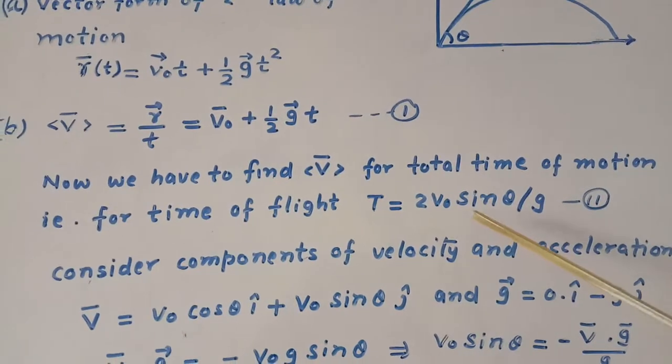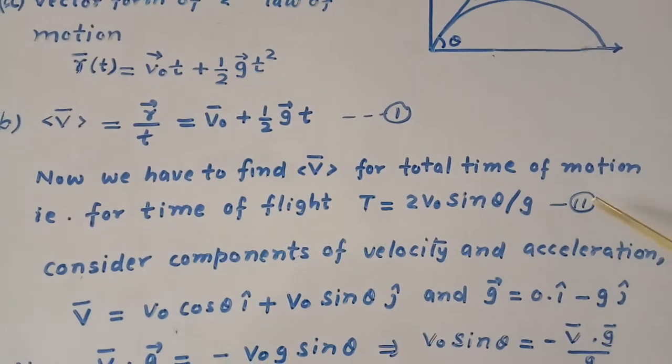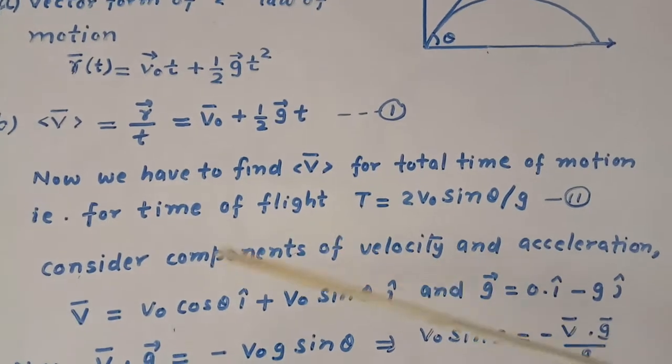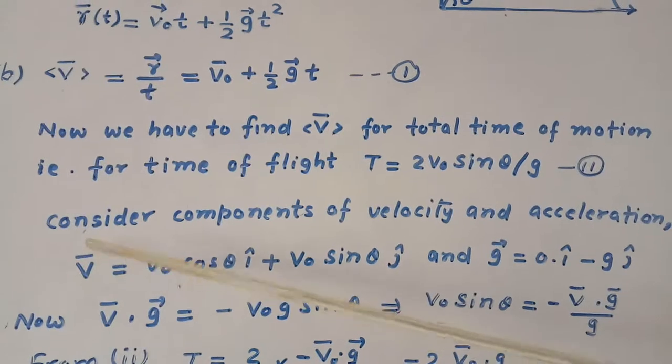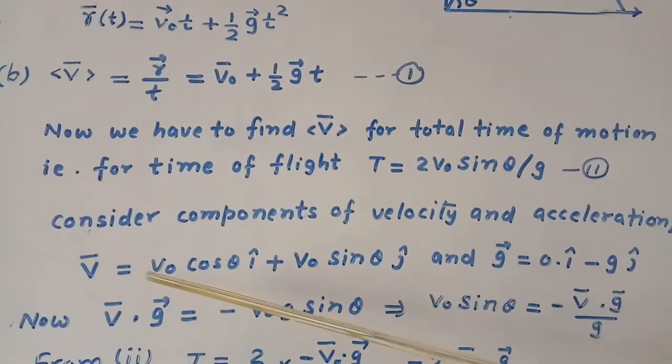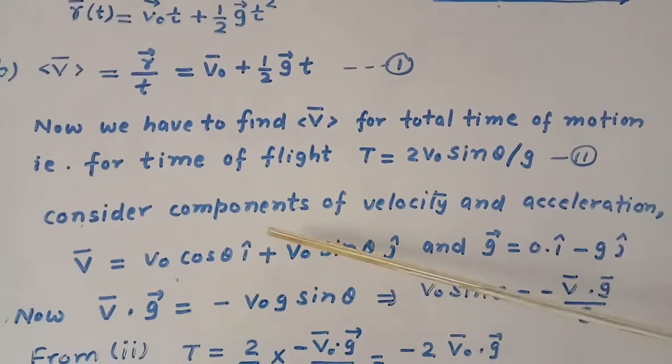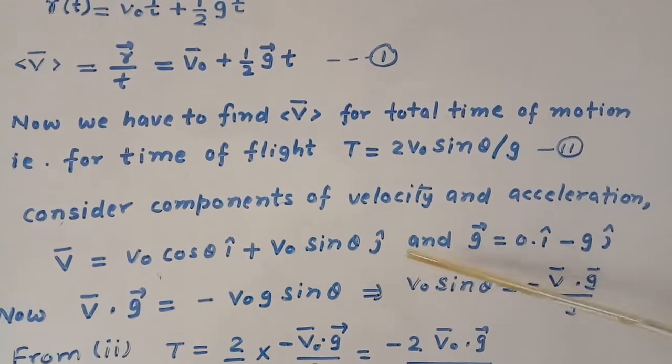We have to find V0 sin theta divided by G using the dot product of two vectors. We write V0 equals V0 cos theta i cap plus V0 sin theta j cap.